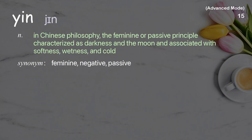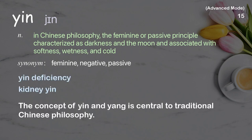Yin: in Chinese philosophy, the feminine or passive principle, characterized as darkness and the moon and associated with softness, wetness, and cold. Examples: yin deficiency. Kidney yin. The concept of yin and yang is central to traditional Chinese philosophy.